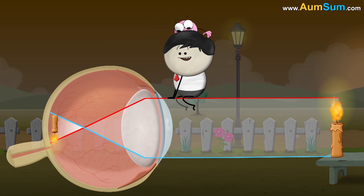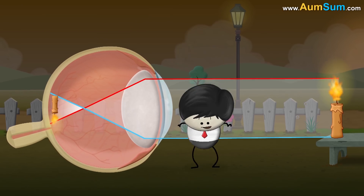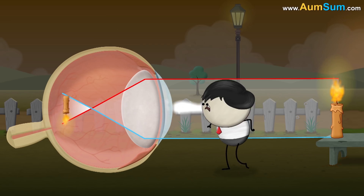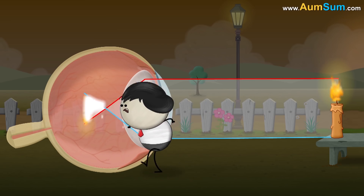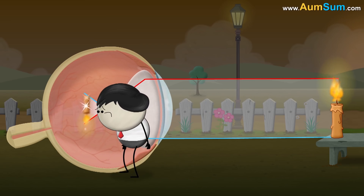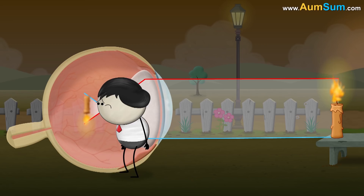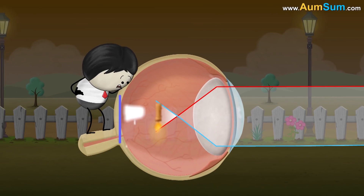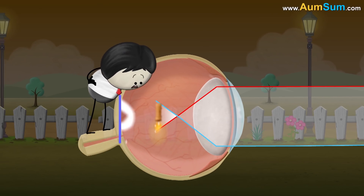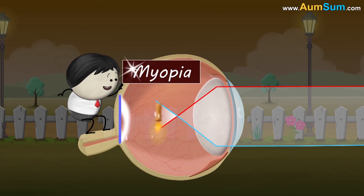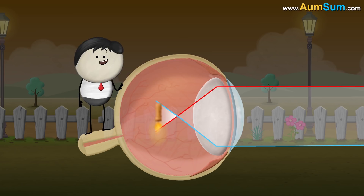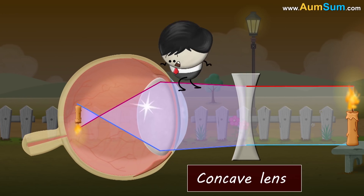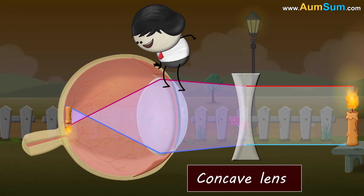However, in some people, the light does not get properly focused on the retina, causing blurry vision. When light gets focused before the retina, the defect is called myopia. Myopia can be corrected using glasses having concave lenses.